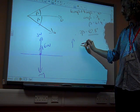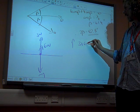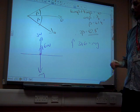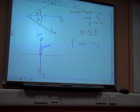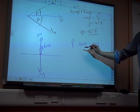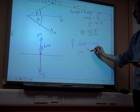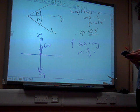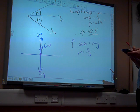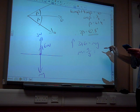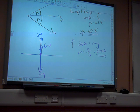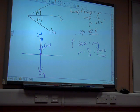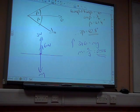So, if we resolve vertically, we've got that 3 plus 6 is equal to Mg. So, Mg equals 9. So, the mass is 9 over G. So, that is 0.918 to three significant figures.